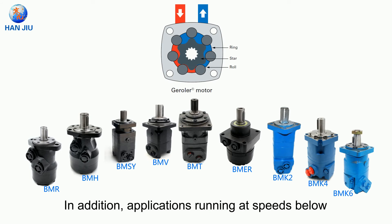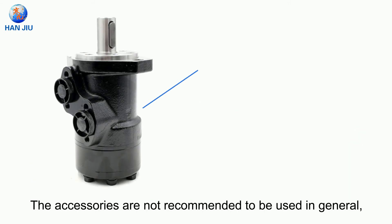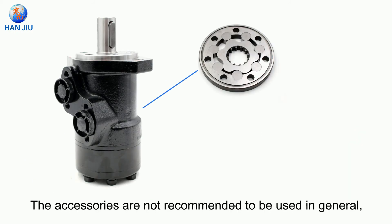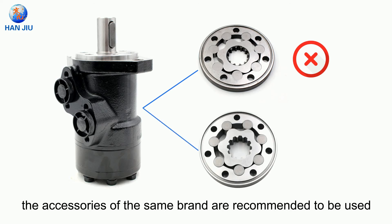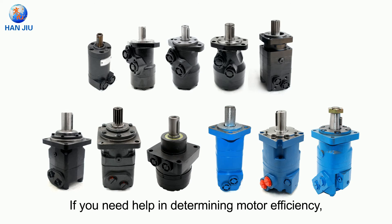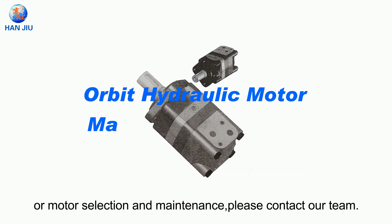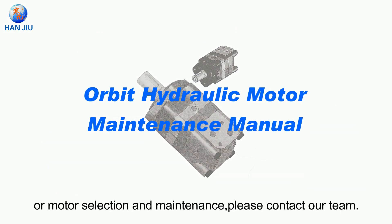Applications running at speeds below 100 RPM should consider using geraler motors. Accessories are not recommended to be mixed across brands — accessories of the same brand are recommended for use on motors of the same brand. If you need help determining motor efficiency, motor selection, or maintenance, please contact our team.